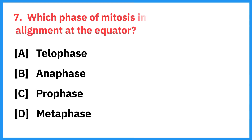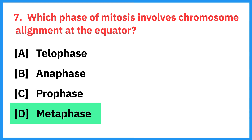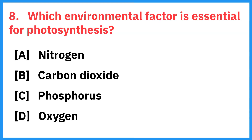Which phase of mitosis involves chromosome alignment at the equator? Correct answer is metaphase. Which environmental factor is essential for photosynthesis? Correct answer is carbon dioxide.